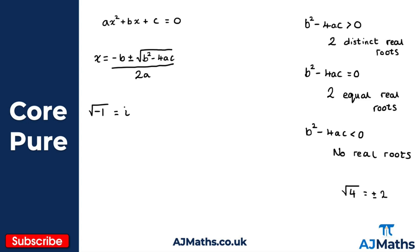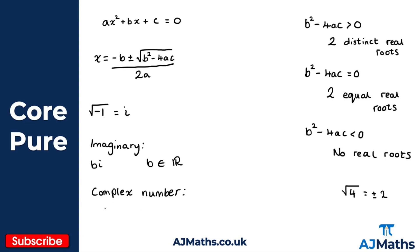An imaginary number is a number of the form bi, where b belongs to the reals. A complex number is made up of two parts: a real part and an imaginary part, and it looks like a plus bi, where both a and b belong to the reals.